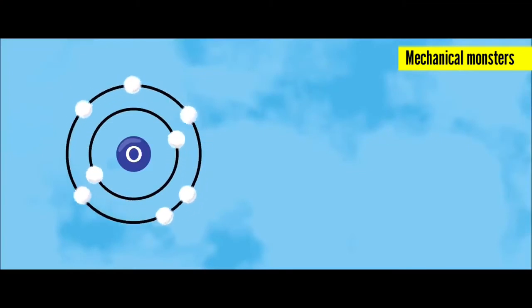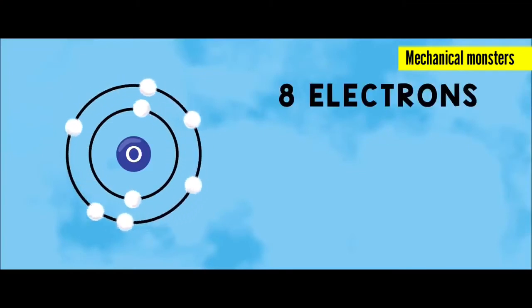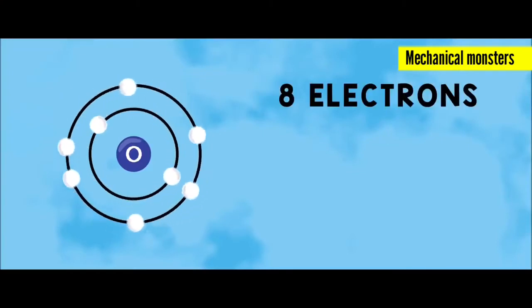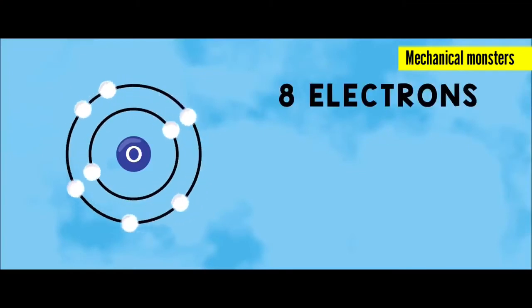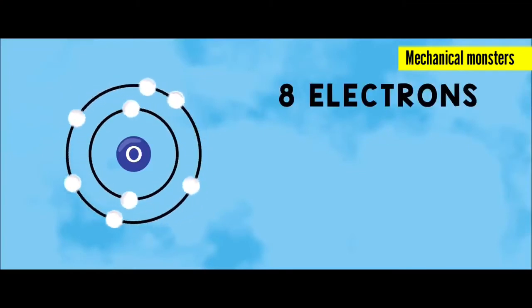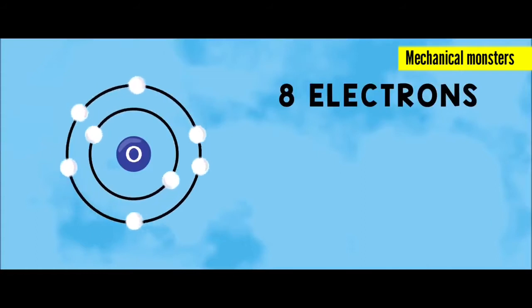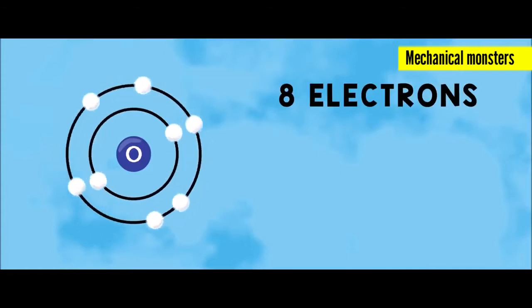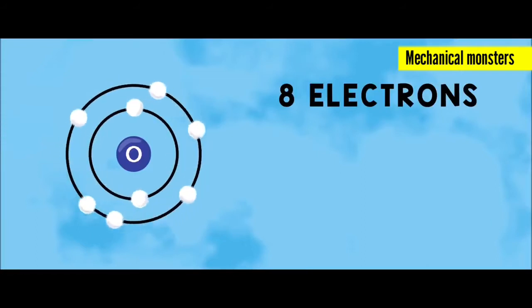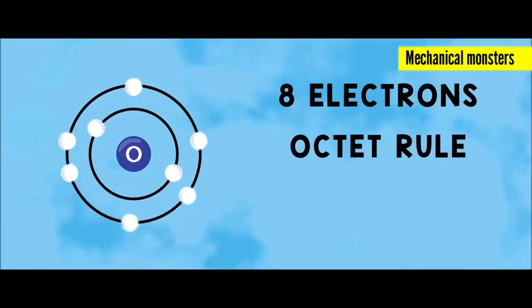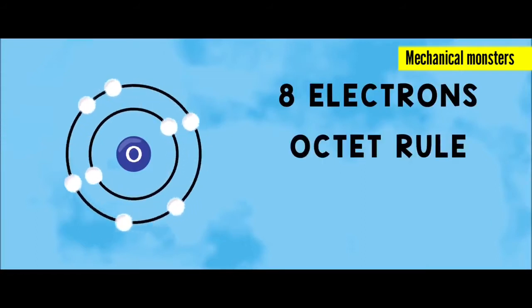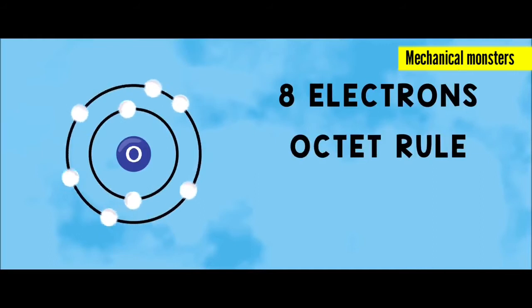We need to take all the electrons in the outer shell. There is a tendency for the outer shell. Because the oxygen is stable. There are 6 electrons in the outer shell.